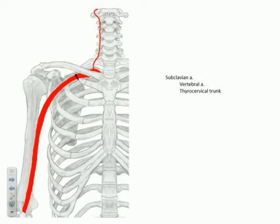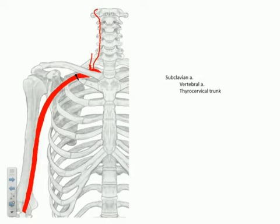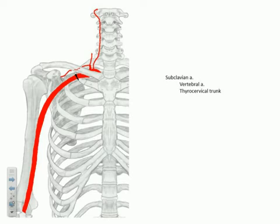The other artery to be aware of is the thyrocervical trunk. It itself is not a full arterial branch — it's actually a trunk that gives off several sub-branches. We'll discuss all the branches of the thyrocervical trunk associated with the cervical region in the head and neck portion of the class. For the time being, we have touched upon one vessel that travels laterally, posterior to the clavicle, and then just over the scapular notch to the suprascapular fossa — this is our suprascapular artery, which travels with the suprascapular nerve.